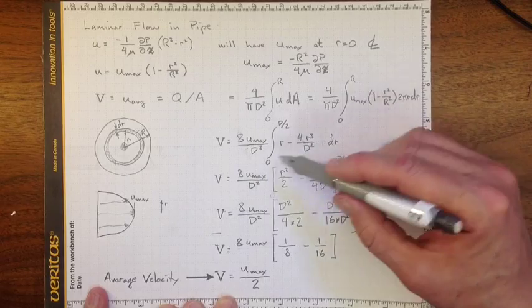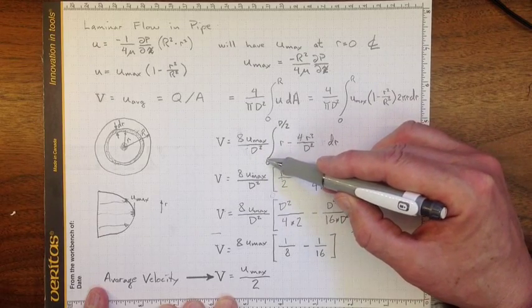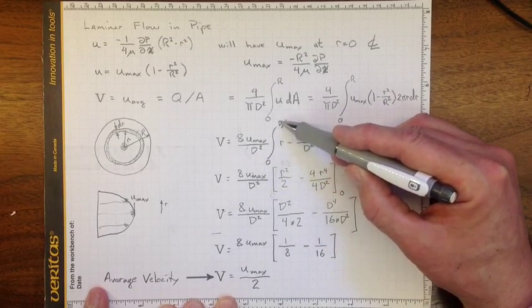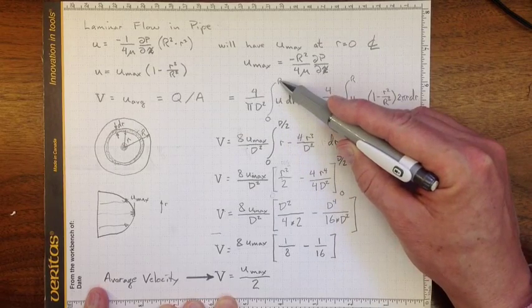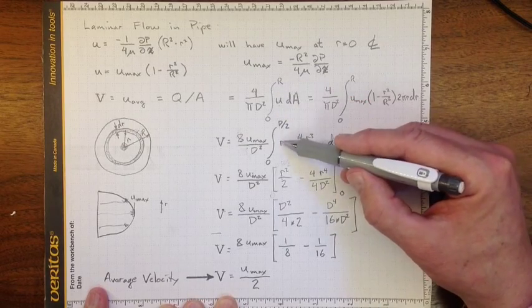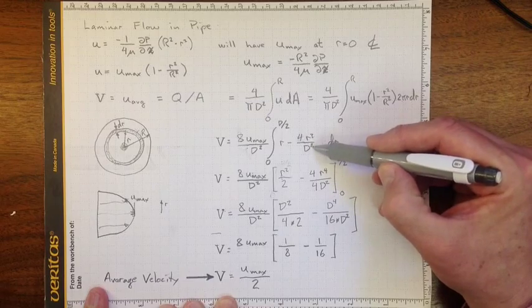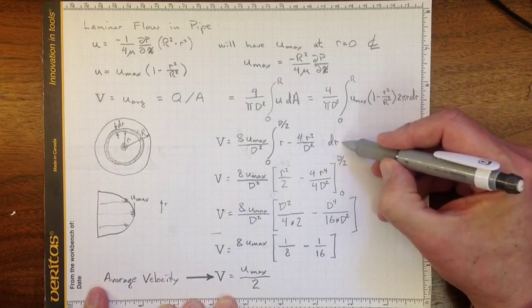Simplifying that a little bit and taking some of the constants outside, integral from zero to d/2 is just the same as the radius, r minus 4r³ over d², times dr.